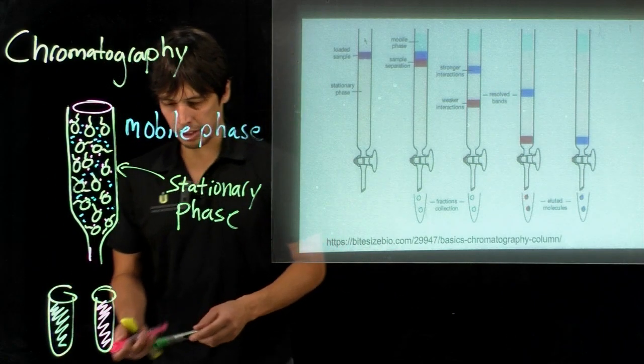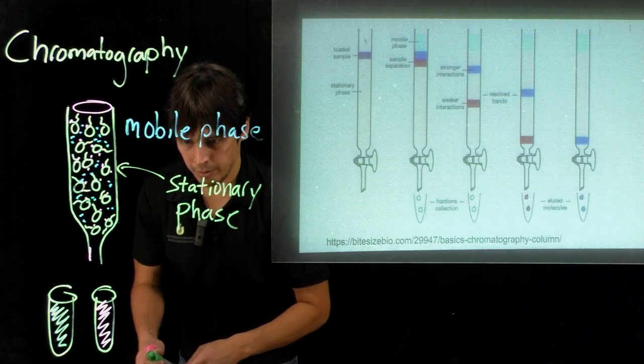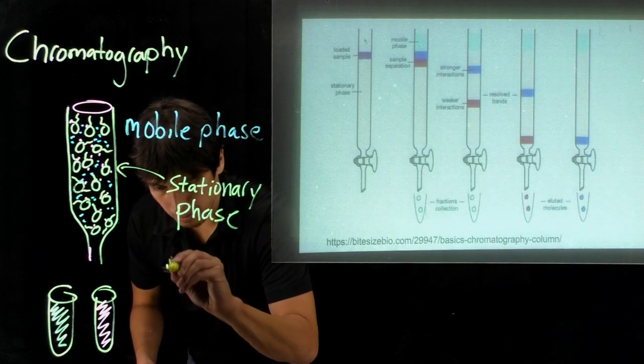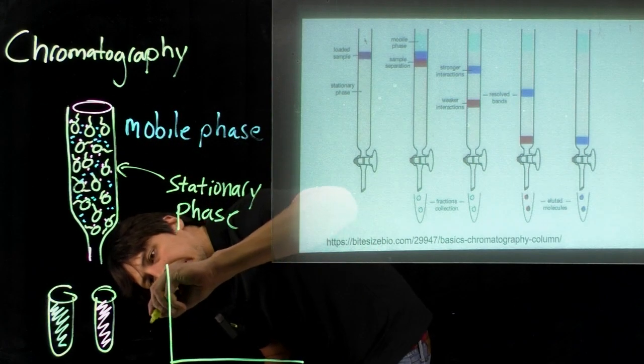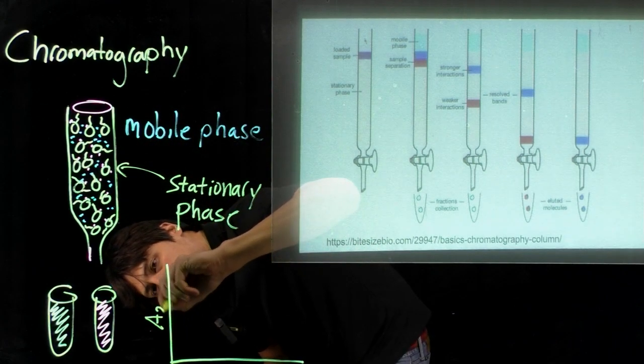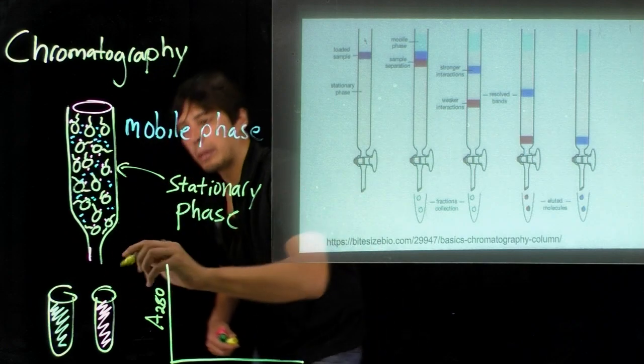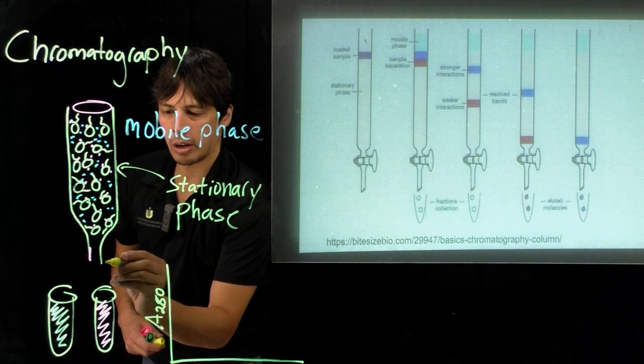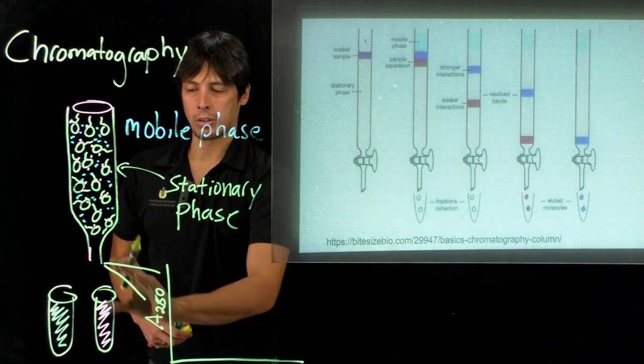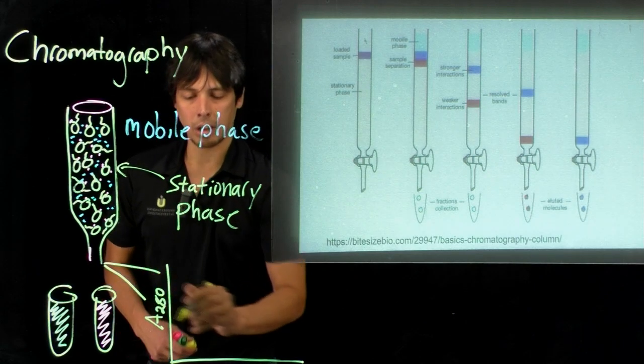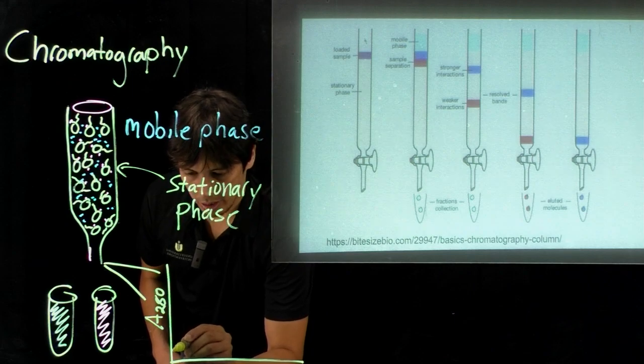We can follow this by UV-Vis absorption. Remember most proteins absorb at 280 nanometers. So if we read the absorbance at 280 nanometers, whatever is being eluted out of the column, we get traces.